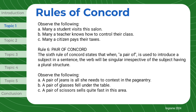Rule 6: Pair of Concord. The sixth rule of Concord states that when 'a pair of' is used to introduce a subject in a sentence, the verb will be singular irrespective of the subject having a plural structure. Observe the following: 'A pair of jeans is all she needs to contest in the pageantry.' 'A pair of glasses fell under the table.' 'A pair of scissors sells quite fast in this area.' Stay tuned for the second part of this series.